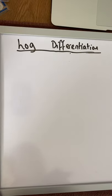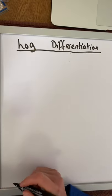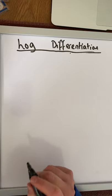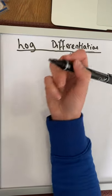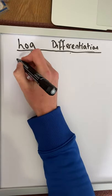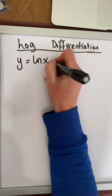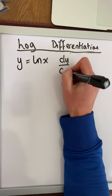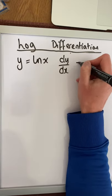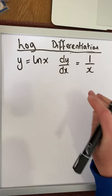In this video, we're going to look at the basics of differentiating logs. So our basic rule, again taken from page 25 of the log tables, where y is equal to the natural log of x, the derivative dy/dx is simply 1 over x.